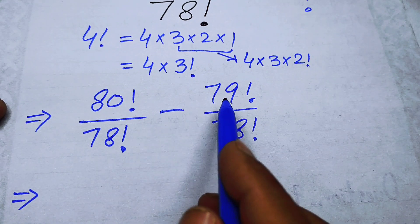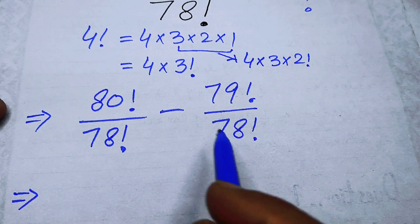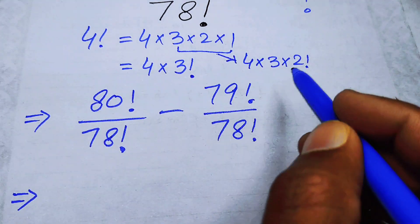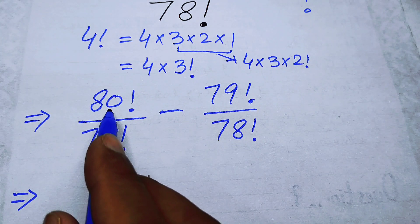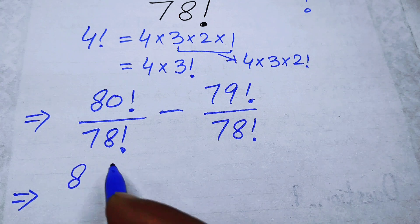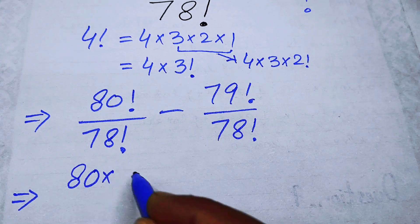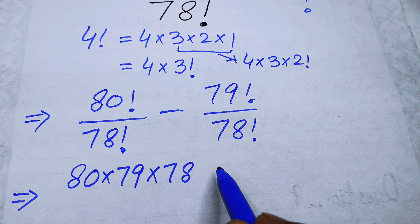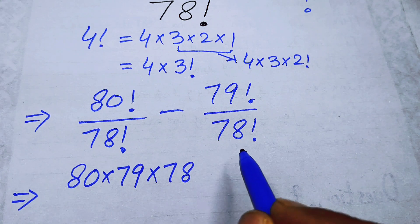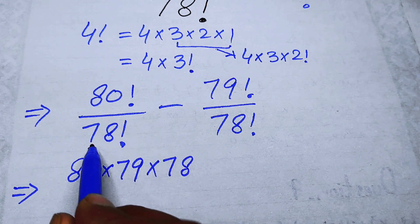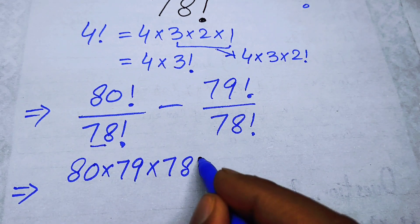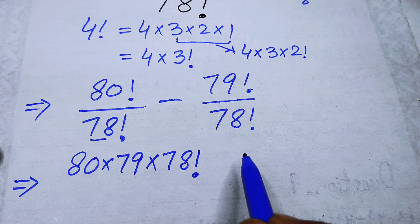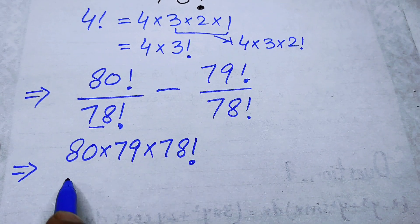I will expand 80! down to 78 terms. When you open 80!, you write the product of all numbers up to 80, so it becomes 80 × 79 × 78!. I can break the multiplication at 78, so the numerator becomes 80 × 79 × 78! over 78!.